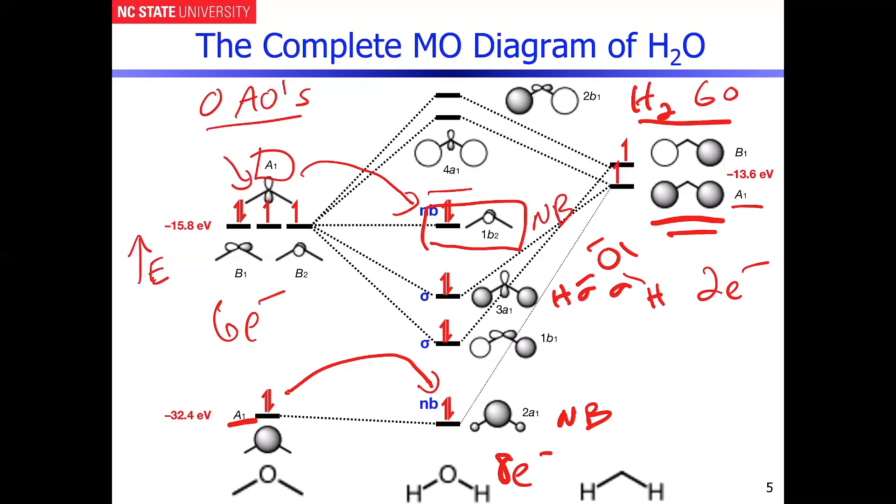And then, of course, we have two lone pairs, which are the non-bonding pairs that you see in this diagram. And the other interesting part about this is the highest occupied molecular orbital in oxygen is actually one of the non-bonding pairs that you see.